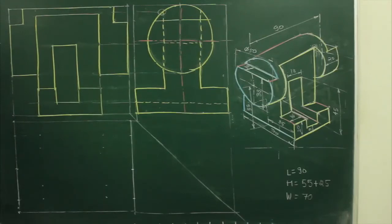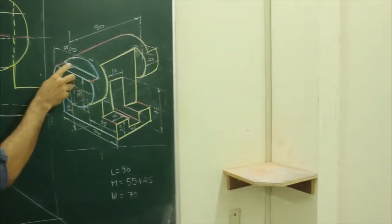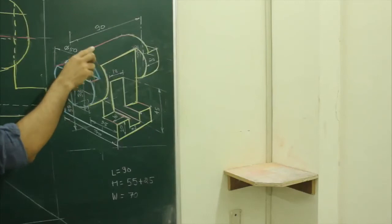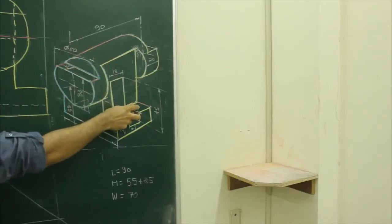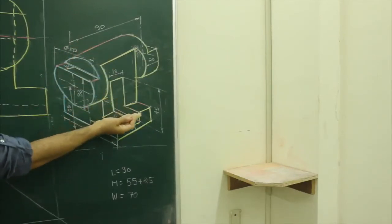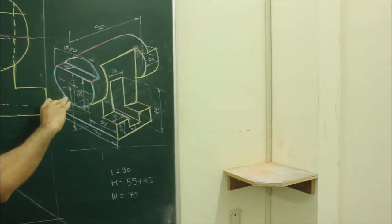Now we will draw the top view. In the top view, if you see the main diagram, the circular portion will appear as a rectangle, then you will see this part and the same part on the other side.